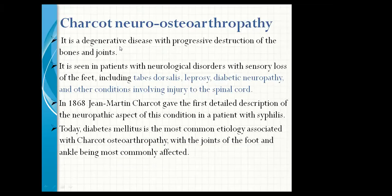Charcot neuro-osteoarthropathy is a degenerative disease with progressive destruction of bone and joint. It is seen in patients with neurological disorders with sensory loss of the foot, including tabes dorsalis, leprosy, diabetic neuropathy, and other conditions involving injury to the spinal cord. In 1868, Jean-Martin Charcot gave the first detailed description of this neuropathic condition. Today, diabetes mellitus is the most common etiology associated with Charcot osteoarthropathy, with the joints of the foot and ankle being most commonly affected.